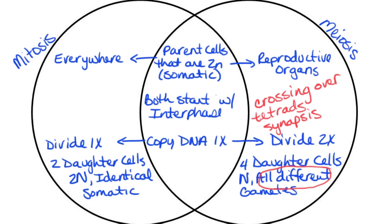Another thing we could say is that mitosis is going to happen really all of the time throughout an organism's life, whereas meiosis usually has a limited time period where we're actually going to have the gametes — the egg and the sperm — produced by that original parent organism.